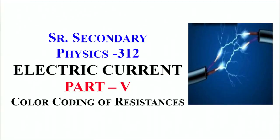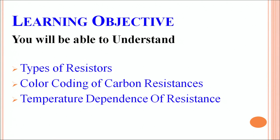In this part 5 on Electric Current, Chapter 17, we will be talking about color coding of resistances. The learning objectives in this part: we will be able to understand how many types of resistors are there, how to read the color coding of carbon resistances, and how does the temperature cause any change in the value of resistance.